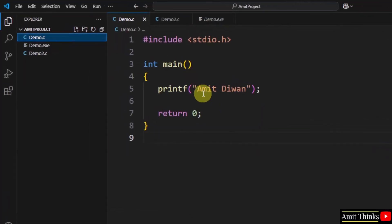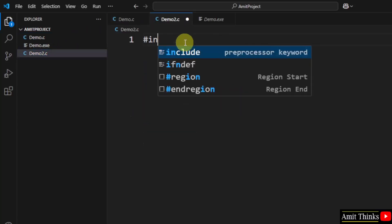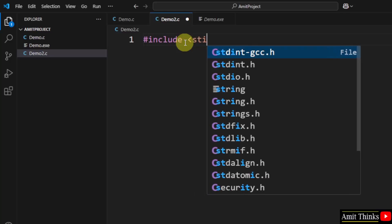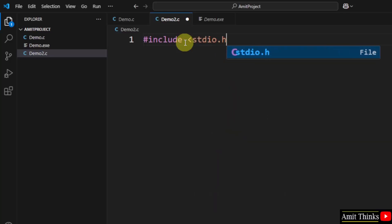Now let us write a program like what we did in the first example. We will do the same. First, the header file, then the main function. Now let us create a variable.